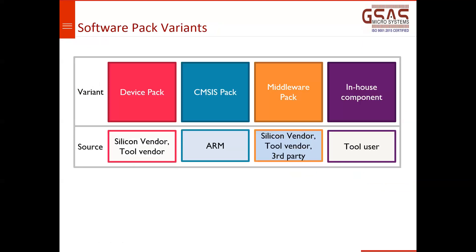There are various software pack variants: device pack, CMSIS pack, and middleware pack. The device pack is provided by silicon vendors such as NXP, ST, or Microchip. The CMSIS pack is provided by ARM. The middleware pack can be provided by the silicon vendor, tool vendor, or third-party. ARM, many third-party vendors, and silicon vendors like ST and NXP sometimes provide their own middleware stacks.